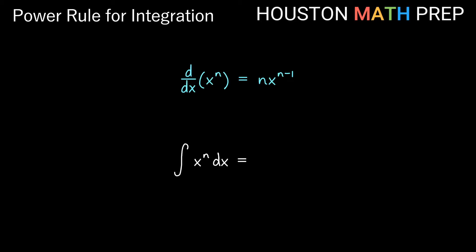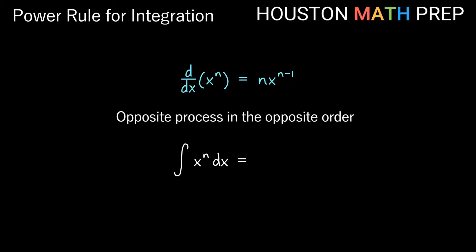So our power rule for integration — if we were going to take the antiderivative of x to some power as the function — that's simply going to be the opposite process in the opposite order. Here we multiplied in the front and then subtracted in the exponent. So going in the opposite order, we would affect the exponent first: the opposite of subtracting one is adding one to the exponent. Then instead of multiplying out front, we're going to divide by our new power, n plus one.